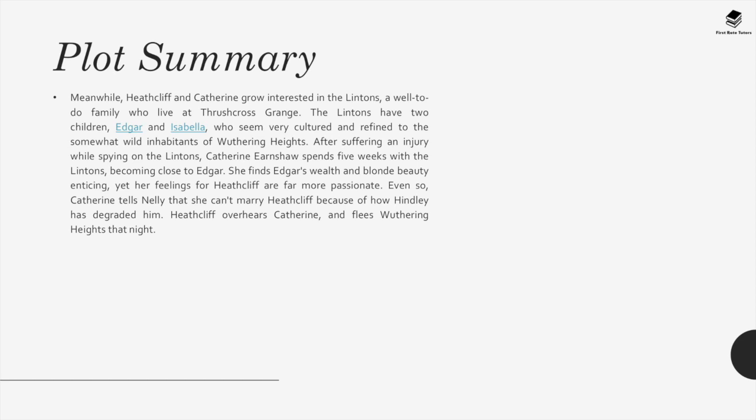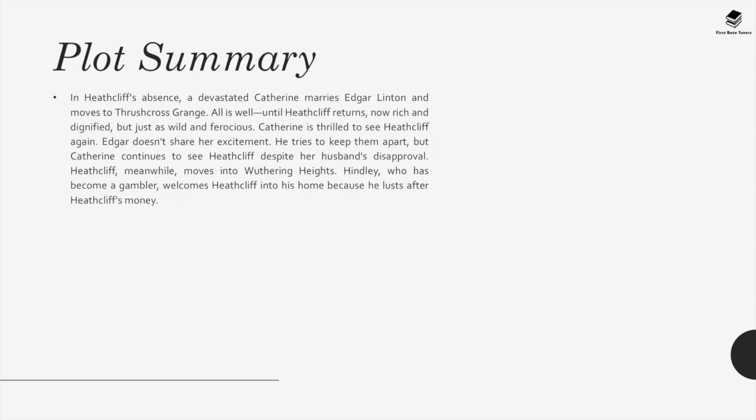Heathcliff overhears Catherine and flees Wuthering Heights that night. In his absence, a devastated Catherine marries Edgar Linton and moves to Thrushcross Grange. All is well until Heathcliff returns, now rich and dignified but just as wild and ferocious. Catherine is thrilled to see Heathcliff again; Edgar doesn't share her excitement. He tries to keep them apart, but Catherine continues to see Heathcliff despite her husband's disapproval. Heathcliff meanwhile moves into Wuthering Heights, where Hindley, who has become a gambler, welcomes him because he is after Heathcliff's money.